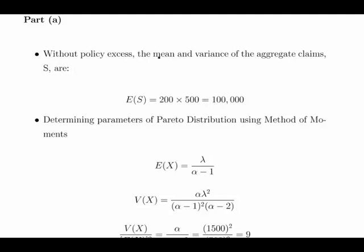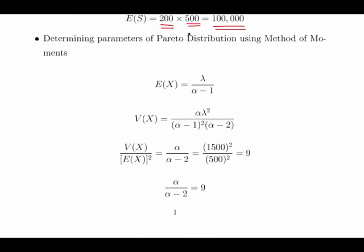Without policy excess the mean and variances of the claims are as following. So we expect 200 claims, and on average these claims cost $500. So essentially we are expecting to be paying out 100,000. According to this model that could be really probably more like 100 million or something like that, but just keep the numbers simple.